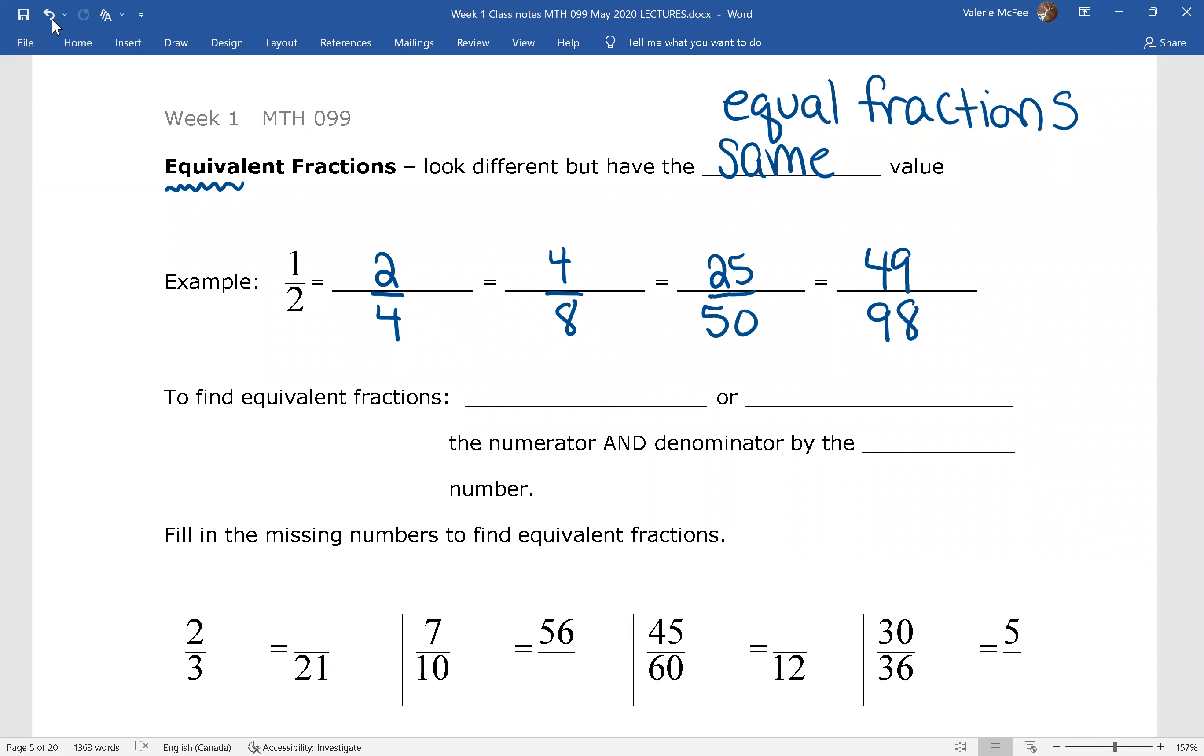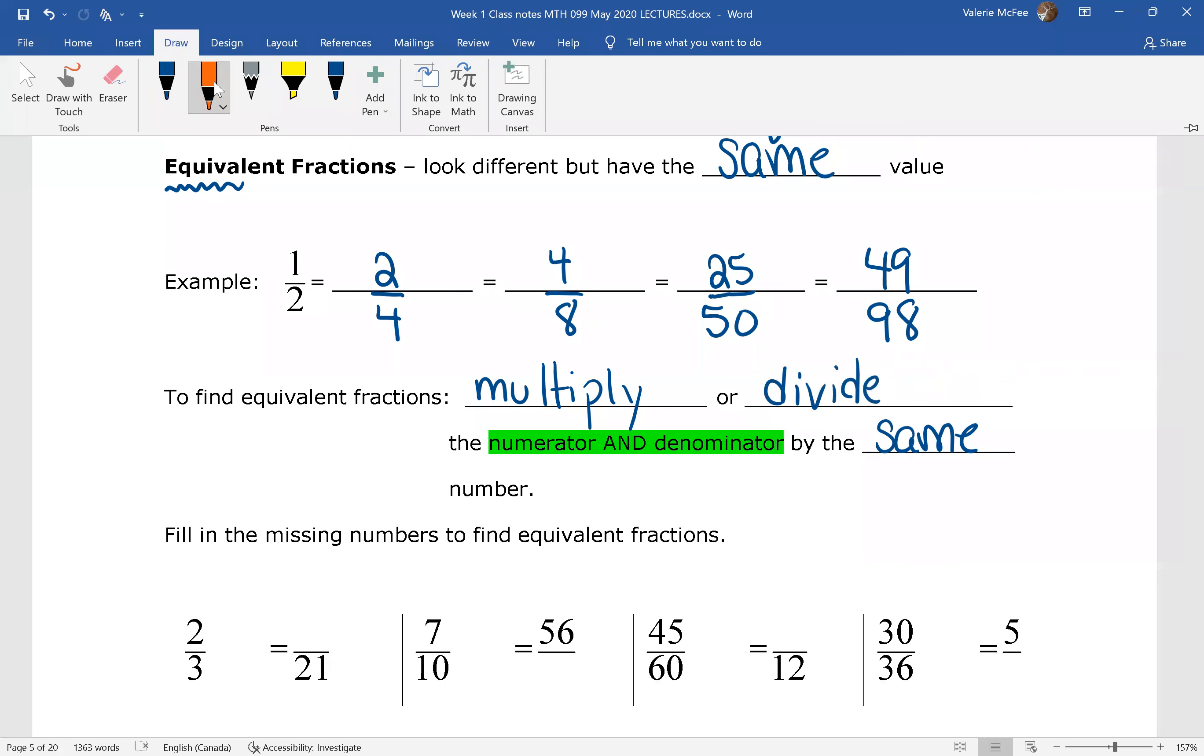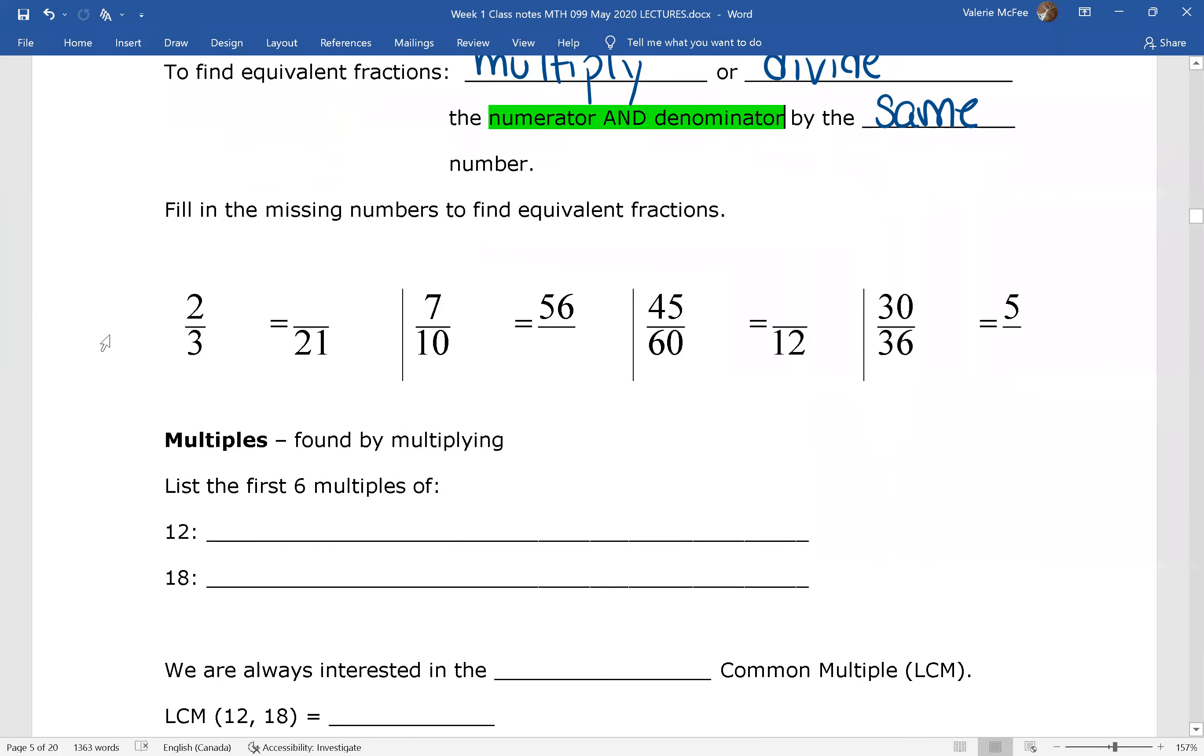When we find equivalent fractions, we have to multiply or divide, but usually we multiply the numerator and the denominator. That's important. We're multiplying the numerator and the denominator by the same number. So if we look here, I multiplied by two and I multiplied by two. So let's find some equivalent fractions. I know I want to go from a denominator of three to a denominator of 21. So I know that I'm multiplying the denominator and the numerator by seven. Now I'm going from a numerator of seven to a numerator of 56. I'm multiplying the numerator and the denominator by eight.